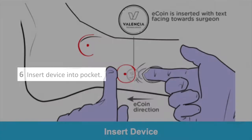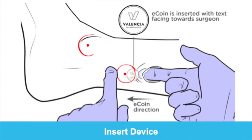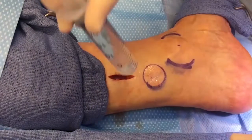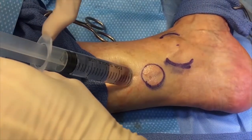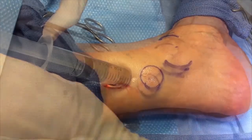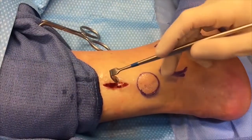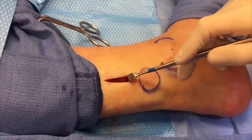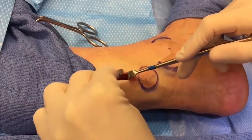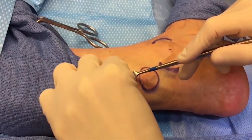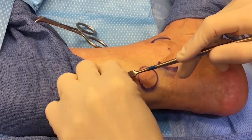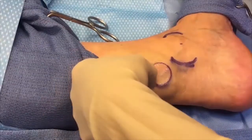Step 6: Insert Device Into Pocket. The device is removed from its packaging in sterile fashion. Generously irrigate the pocket with normal saline. Insert the device and manually slide it caudally on top of the fascia until centered at the marked circle.